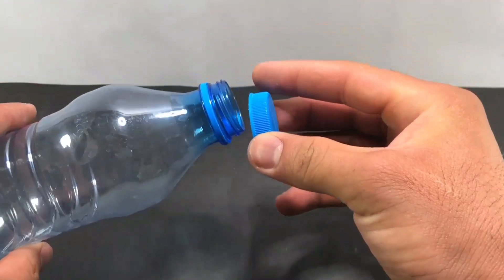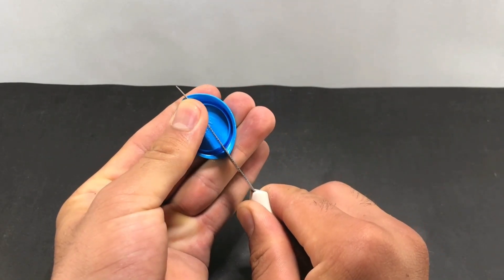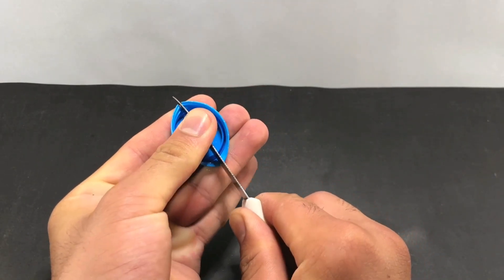In this part, we will learn how to make a rope with recycled bottles. Using a razor or a knife, cut the bottle cap in half.